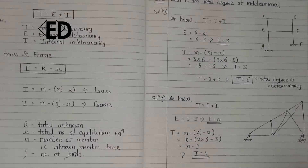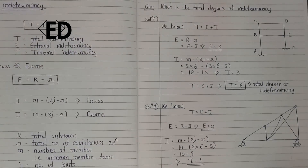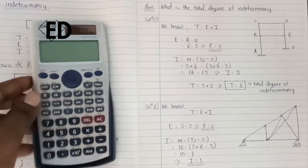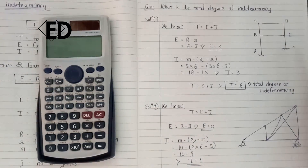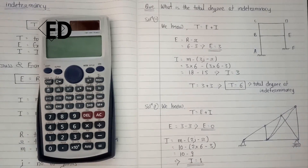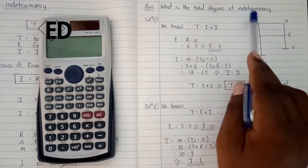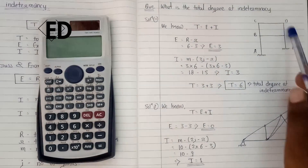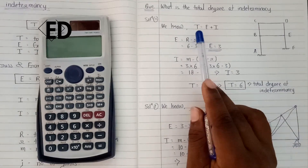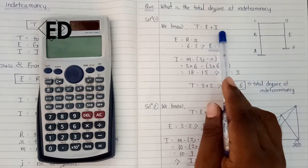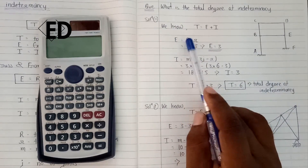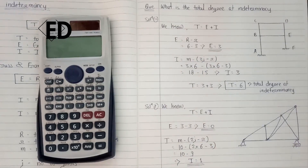Now moving towards the questions, I am taking two simple examples — first for the frame and second for the truss — just for you to understand the concept of total indeterminacy. We have to calculate the total degree of indeterminacy of this frame structure. We know that T equals E plus I, and E is the external indeterminacy of the structure.